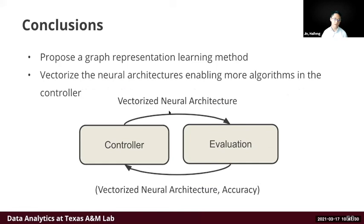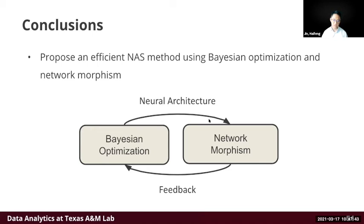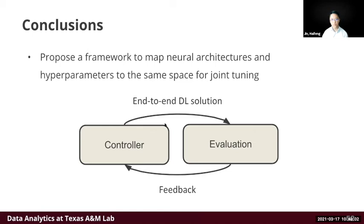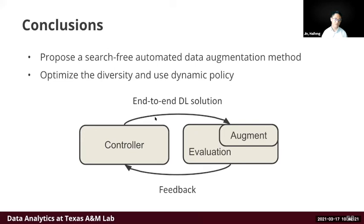In conclusion: first, we vectorize neural architectures so any Euclidean-space machine learning algorithm can be used in the controller. Second, we use Bayesian optimization and network morphism to reduce both N and T̄ in the search loop, accelerating the evaluation process. Third, we map all neural architecture search and other hyperparameters into a unified hyperparameter space and use a tree-based search strategy for end-to-end solutions. Fourth, we found that data augmentation was dominating the search tree, so we moved it out of the search space and handle it dynamically during training.